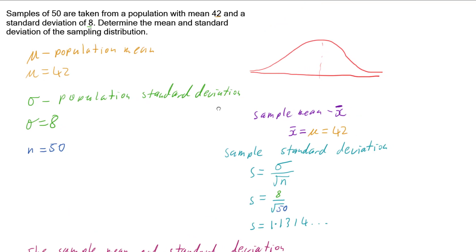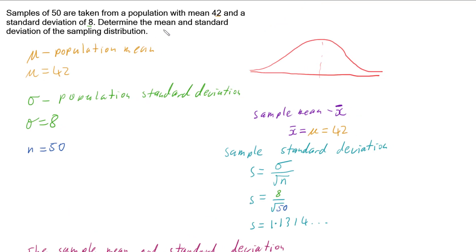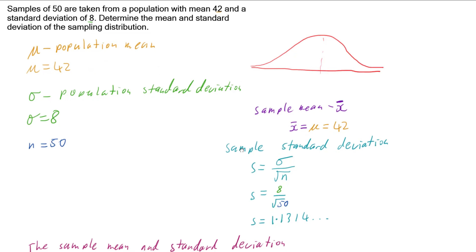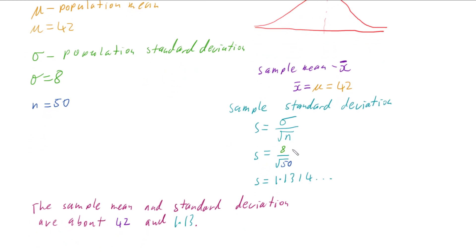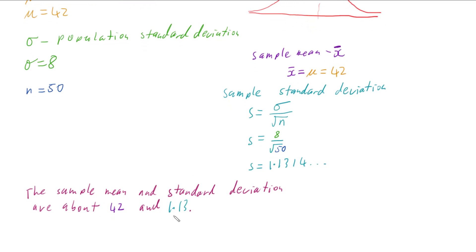So if you're going to take samples from a population and you know the population mean and standard deviation, we expect the sample mean to be the same as the population mean. The sample standard deviation is given by the population standard deviation divided by the square root of the sample size. That way we can work out our sample mean and standard deviation.